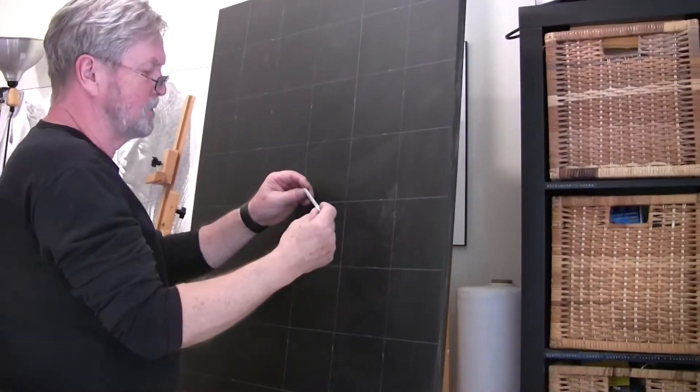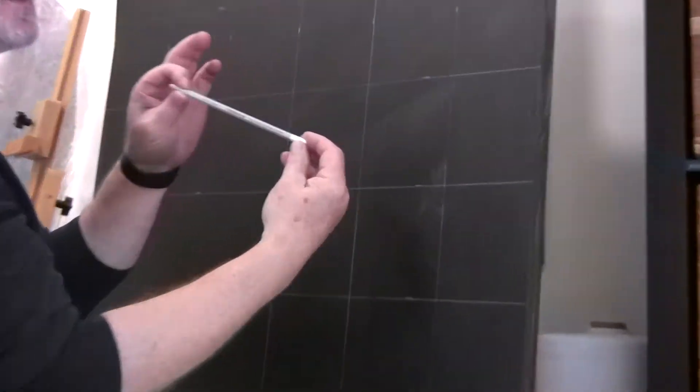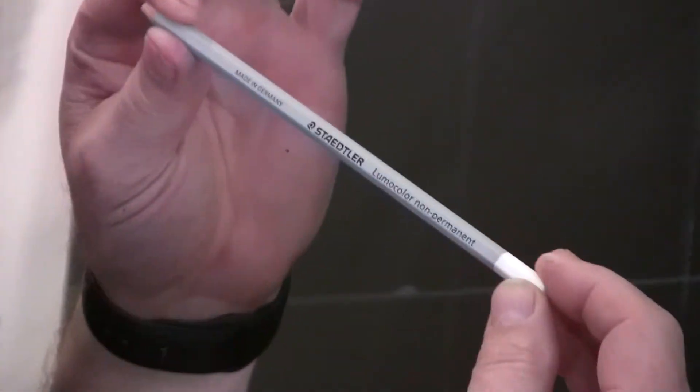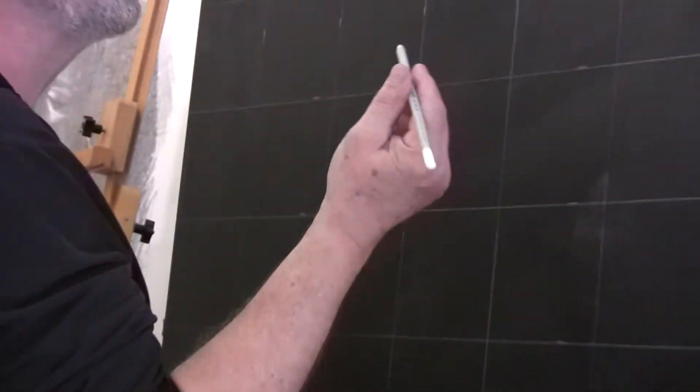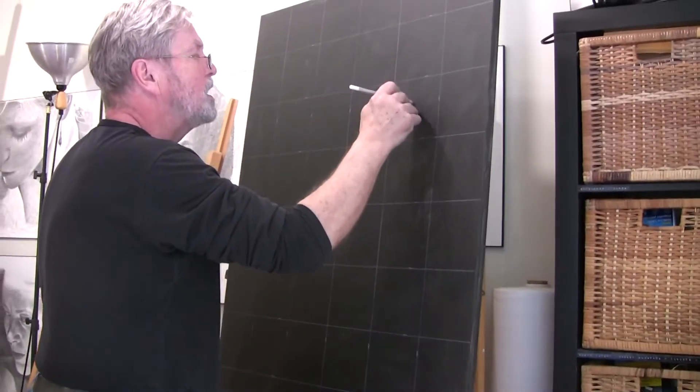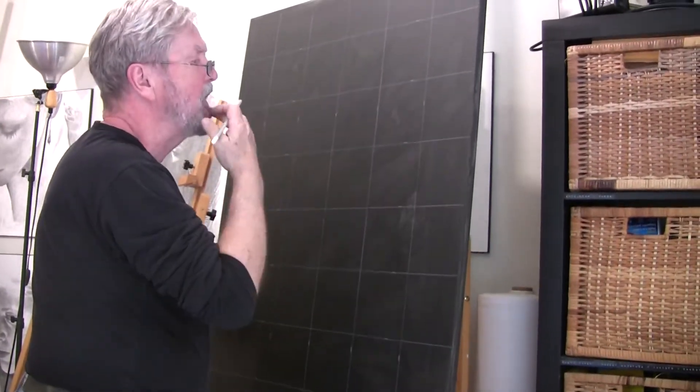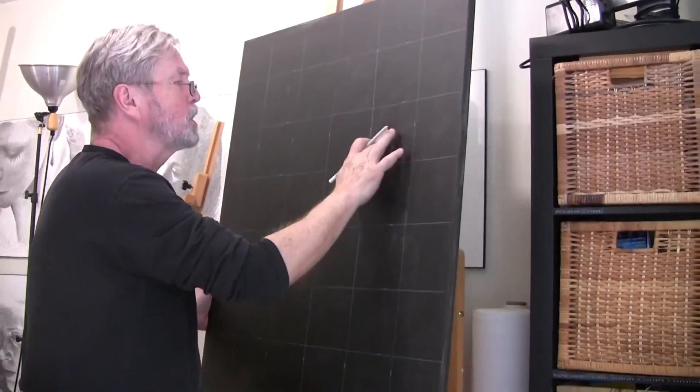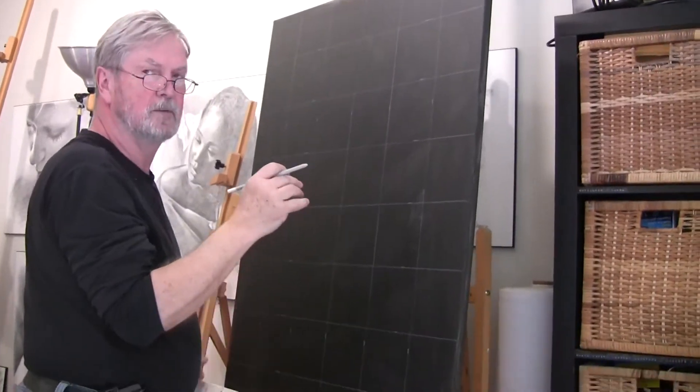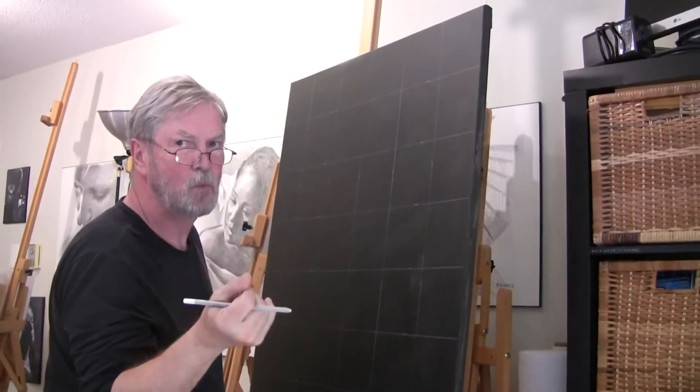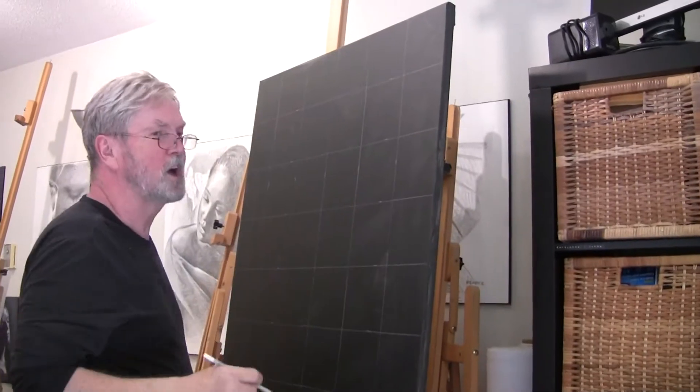The pencils I want you to use are the Stadler Lumicolor Non-Permanent White Pencils. The purpose for that is that when you do draw on the canvas, if you need to erase, even erase the grid, you can just use a piece of paper towel that's wet and wash it off.